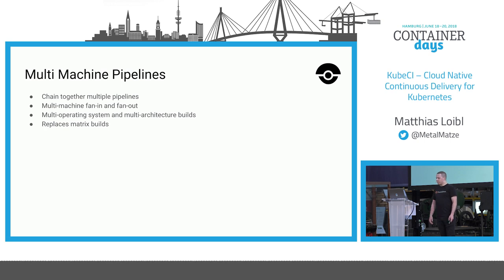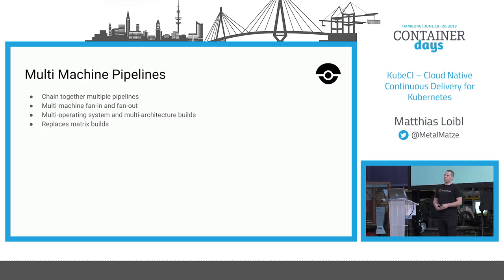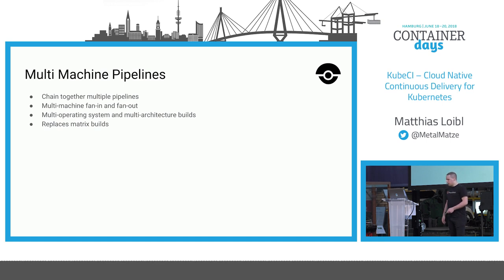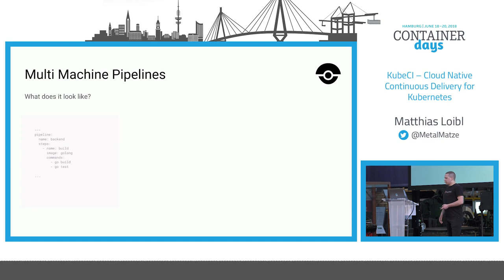Now I want to talk about multi-machine pipelines. Multiple machine pipelines are a way to specify multiple pipelines in the future — these will fan out to multiple machines in your cluster, and once they are done they will fan in and do a step like a Slack notification. For those who know, this will replace the matrix builds in Drone.